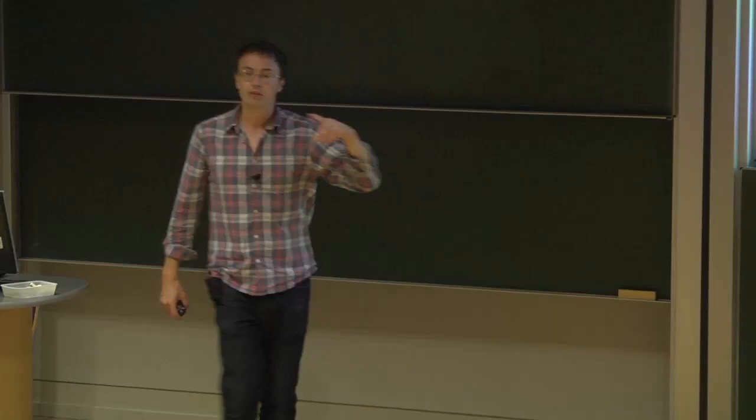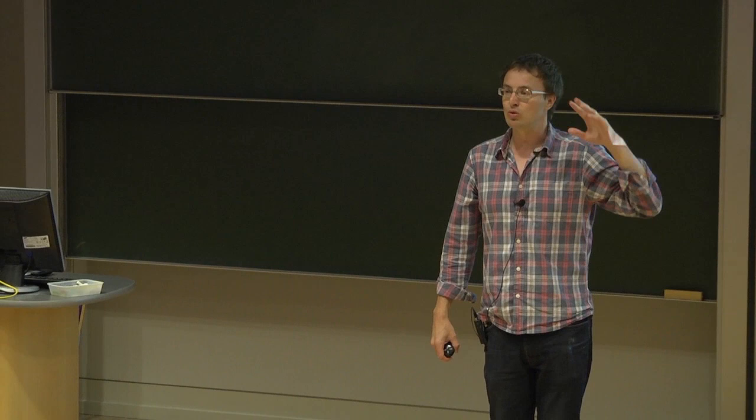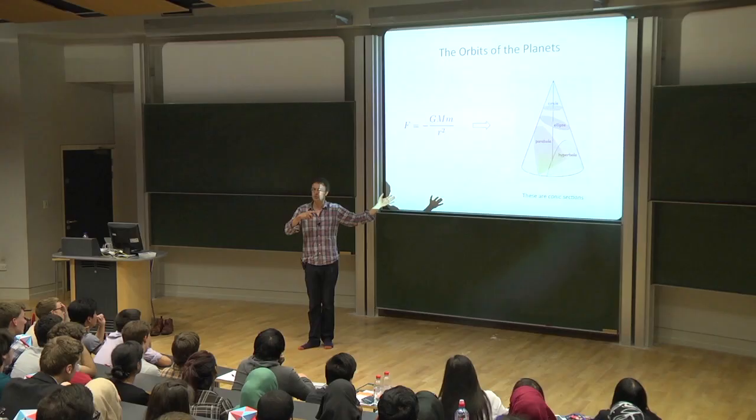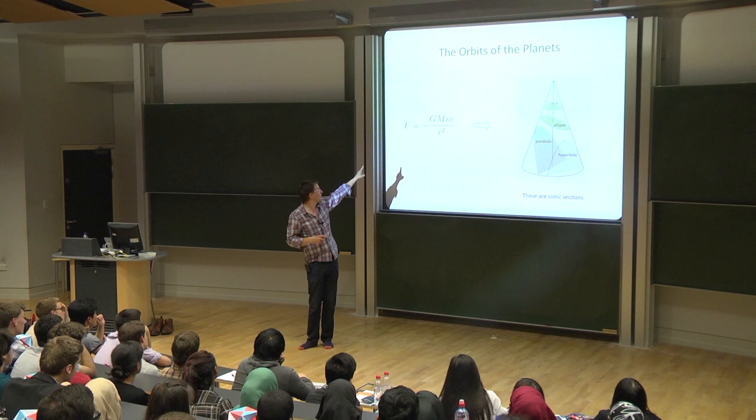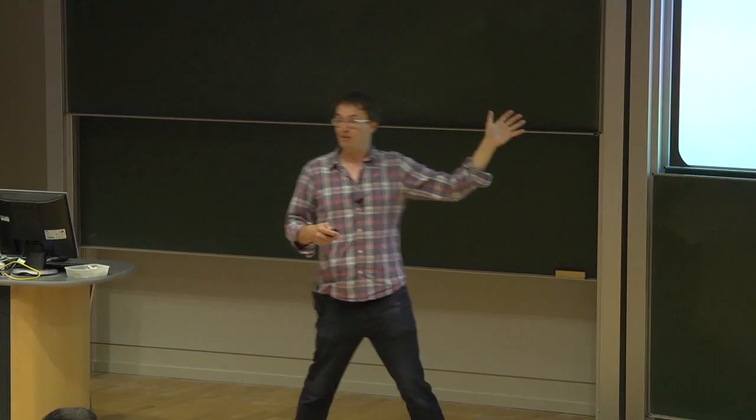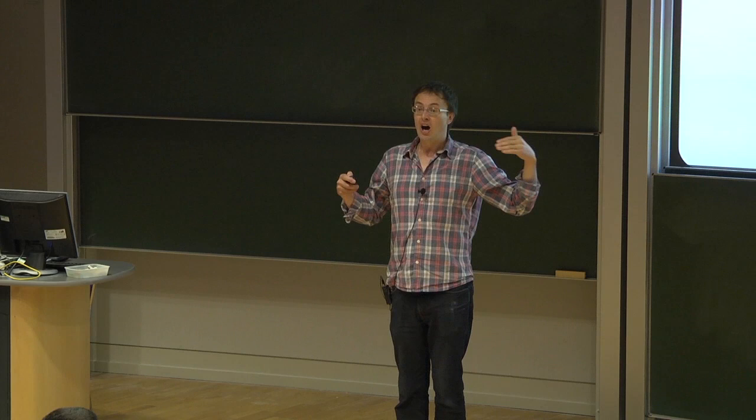That was really one of the big first steps of modern science. If you come and do maths or physics at university, this is something you prove in the first or second year depending on where you go. It takes a few hours to go from the force law to the orbital shapes, but it is something you'll learn very quickly in an undergraduate maths degree.